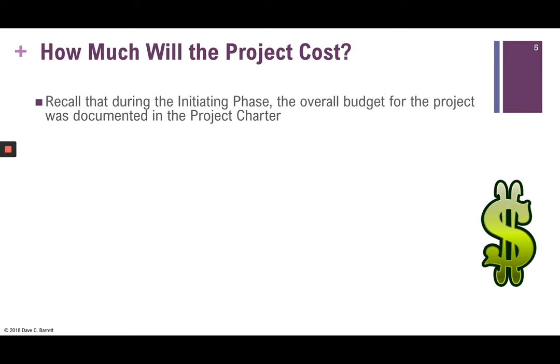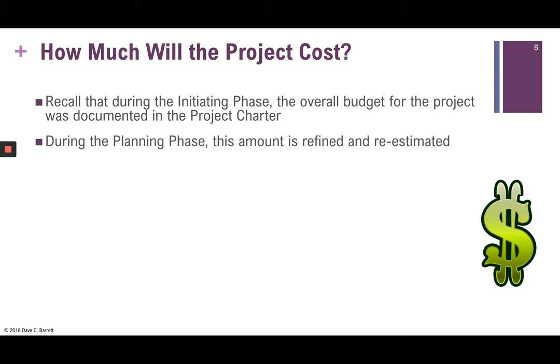First of all, how much will the project cost? Recall that during the initiating phase, the overall budget for the project was documented in the project charter. That starting budget can come from how much has been allocated or the maximum amount available. But often in the initiating phase, not a lot of analysis has gone into that number. So during the planning phase, this amount is refined and in some cases re-estimated — sometimes the budget number may not have been reasonable, too low or even too high. It can be re-estimated and adjusted.